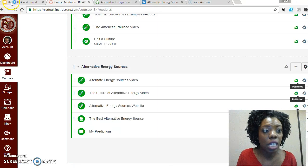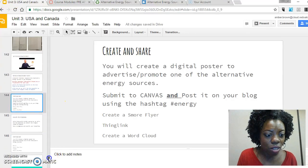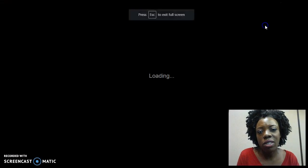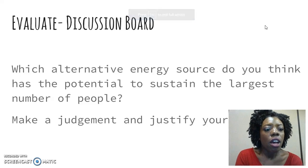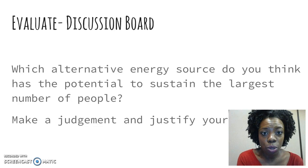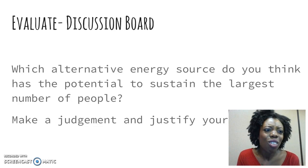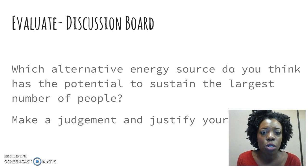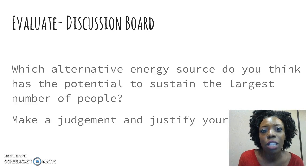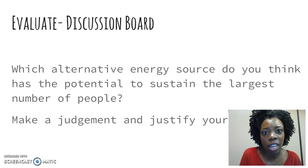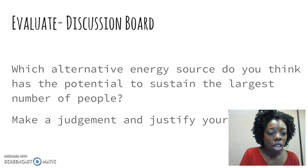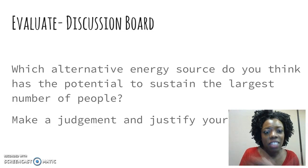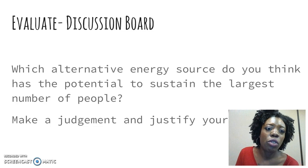Finally, you're going to have a discussion board, and you can even do this before you do your product. The question will be: which alternative energy source do you think has the potential to sustain the largest number of people? Make a judgment and justify your reasoning — which is essentially what you're doing with your ThingLink or Smore. You can even do a left-hand assignment on page 23, draw a one-pager with captions, take a picture, and upload it. This is just a way for us to discuss it.